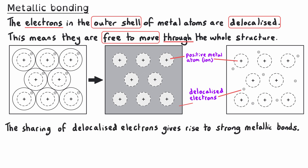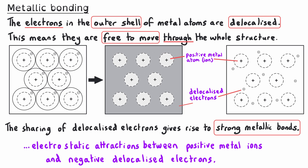The sharing of delocalized electrons gives rise to strong metallic bonds that hold the structure in place. This metallic bonding is down to the electrostatic attraction between the positively charged metal ions and the negatively charged delocalized electrons. The positive ions would repel each other, but they're held in place due to the strong attractions they have for the many delocalized electrons moving through the structure.